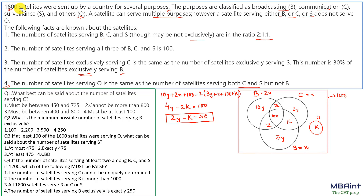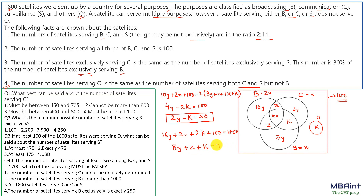Now summing all regions equals 1600. Adding up: 10y + 3y + 3y = 16y, plus 2z, plus 2k, plus 100 equals 1600. Simplifying, this gives us 8y + z + k = 750. So this is our second equation in terms of y, z, and k.